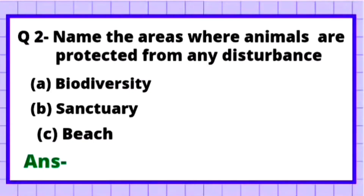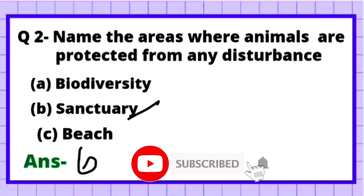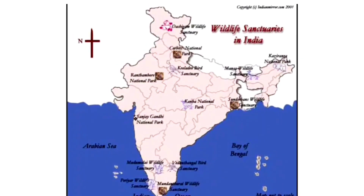Question 2: Name the areas where animals are protected from any disturbance. Option B: Sanctuary. The correct answer is Option B — Wildlife Sanctuary. These are areas where animals are protected from any disturbance. There are some important wildlife sanctuaries present in India that you can learn, as they are important for competitions.